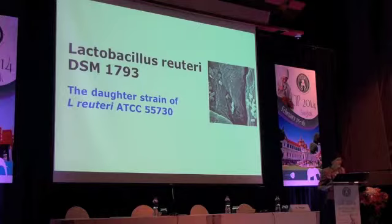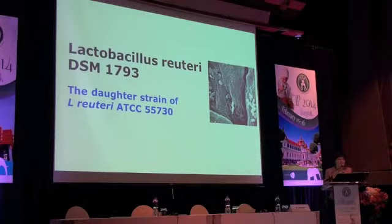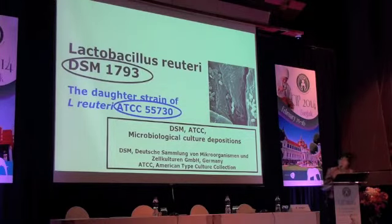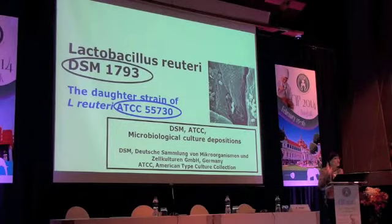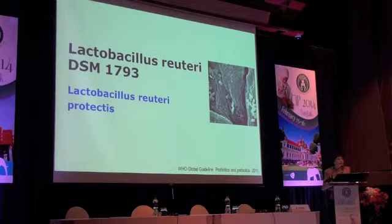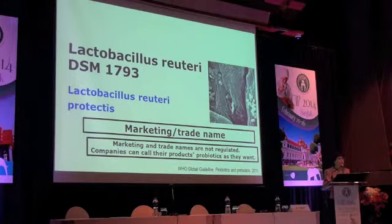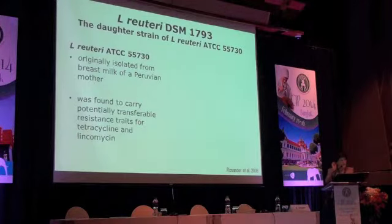You may ask yourself: do I need to know all these letters and numbers? The answer is yes, because this is the identification of these strains. These letters refer to the microbiology culture depository and the numbers indicate under which accession number they are collected. We always have to speak about a specific probiotic. You may also see trade names like 'Protectis' for Lactobacillus reuteri — these are marketing trade names, not regulated, and companies can call their products as they want. For scientific purposes we always need to know all these letters and numbers.